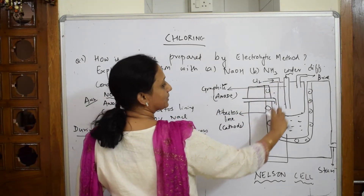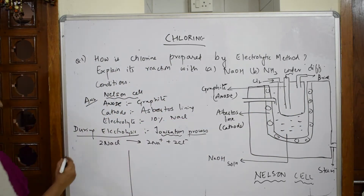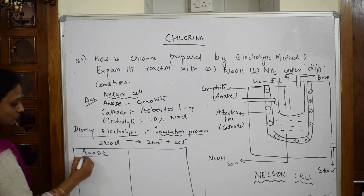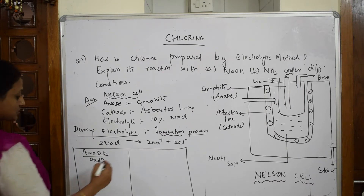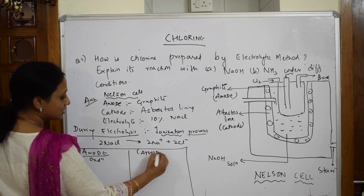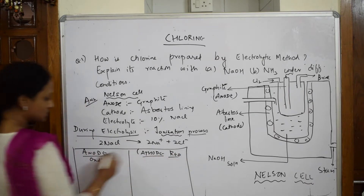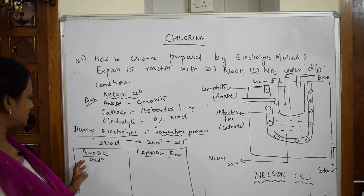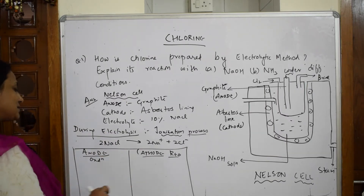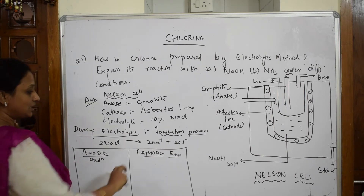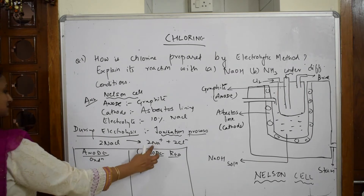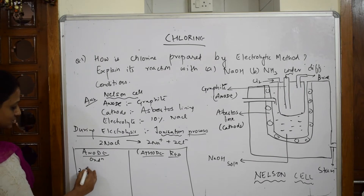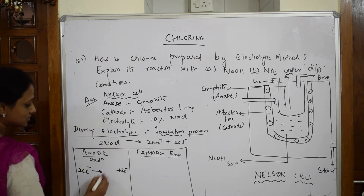The solution operates in two compartments: the anodic compartment and the cathodic compartment. In the anodic compartment, oxidation always occurs — loss of electrons. In the cathodic compartment, reduction always occurs — gain of electrons. In the anodic compartment, chlorine is in excess. So two Cl⁻ ions give up two electrons to form Cl₂ gas: 2Cl⁻ → Cl₂ + 2e⁻.